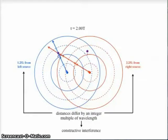And at this point, we can see that those distances differ by an integer multiple of the wavelength. Any time that happens, we get constructive interference.